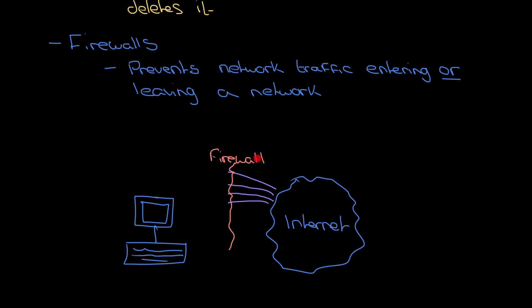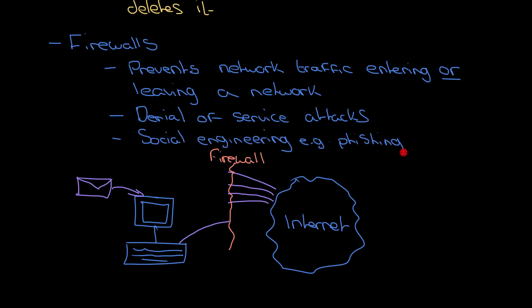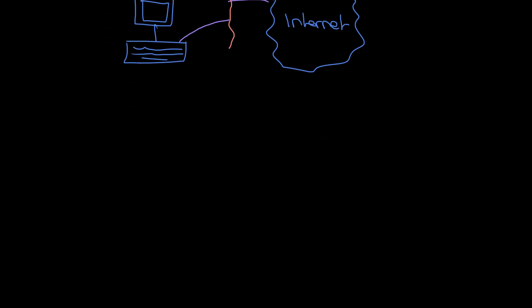But a firewall can also prevent you from doing something silly. Let's say you got a phishing email in and, whatever happens, it gets through your mental defenses and you end up trying to access a website and give your login details away. What a firewall may do is stop you from visiting that website — it might be flagged as a known phishing website — and the firewall just prevents you from accessing it. So two things firewalls are particularly good at: defending against denial of service attacks and social engineering like phishing attacks. Firewalls are super useful and good for more than just those two, but they're a couple of examples for now.